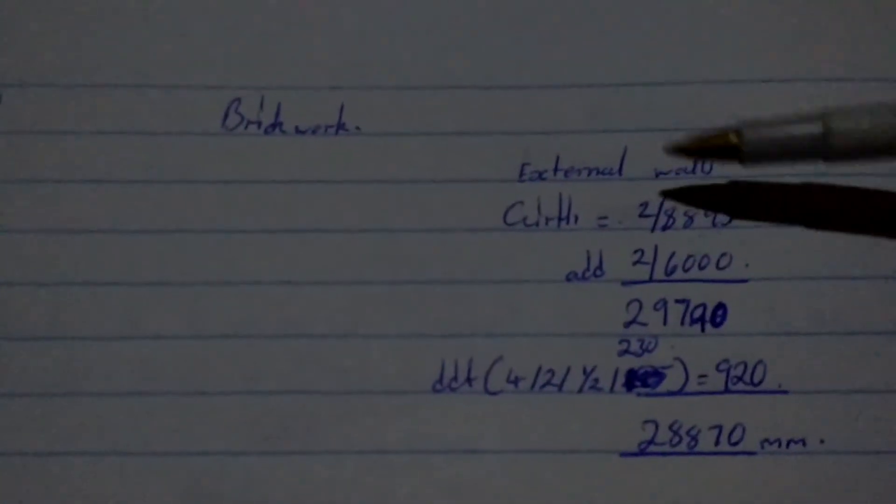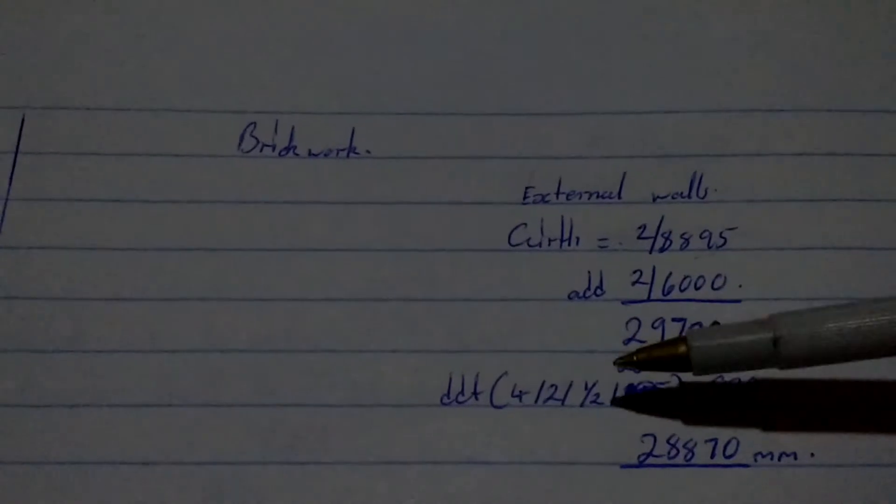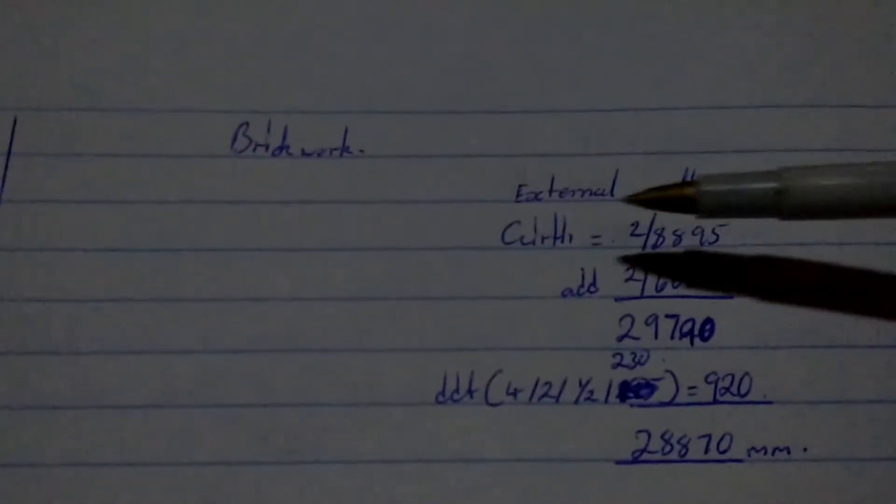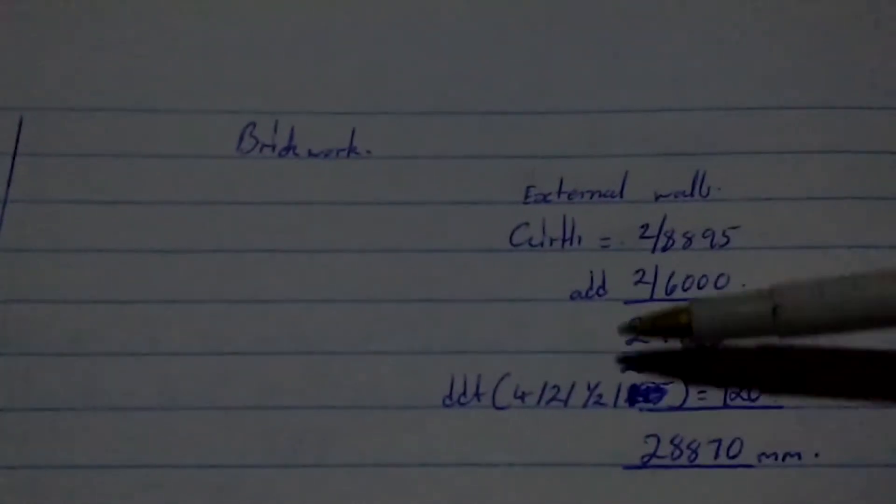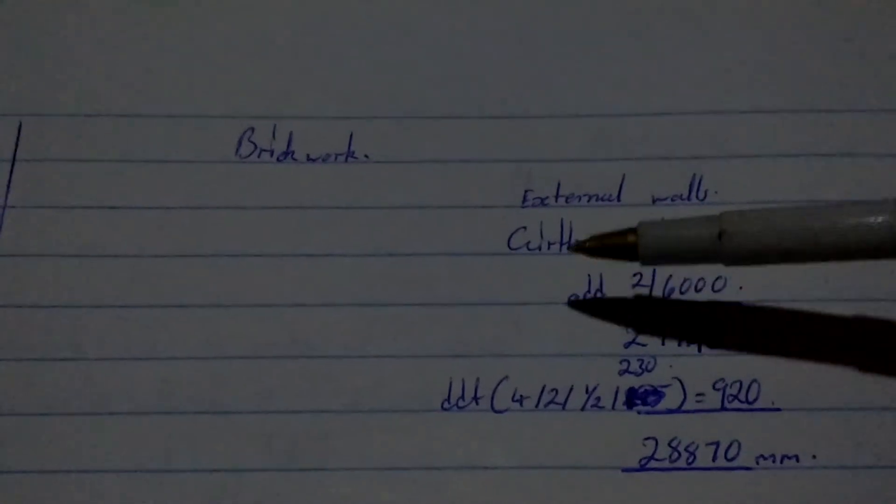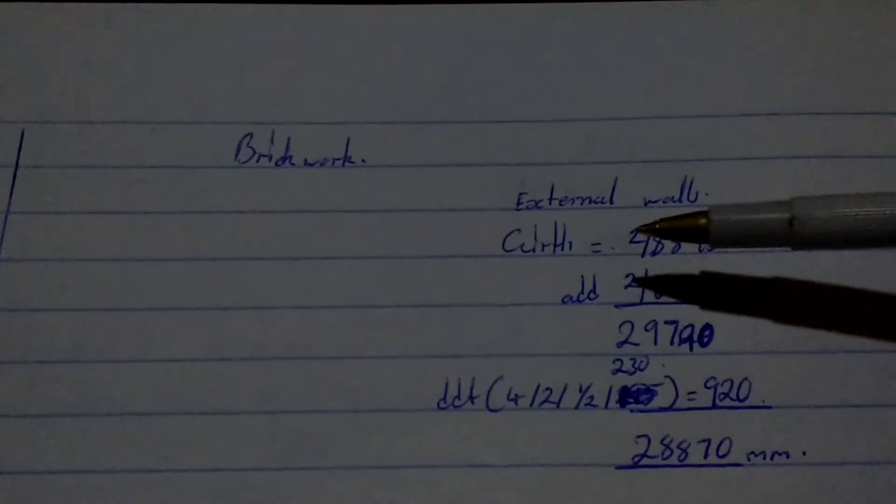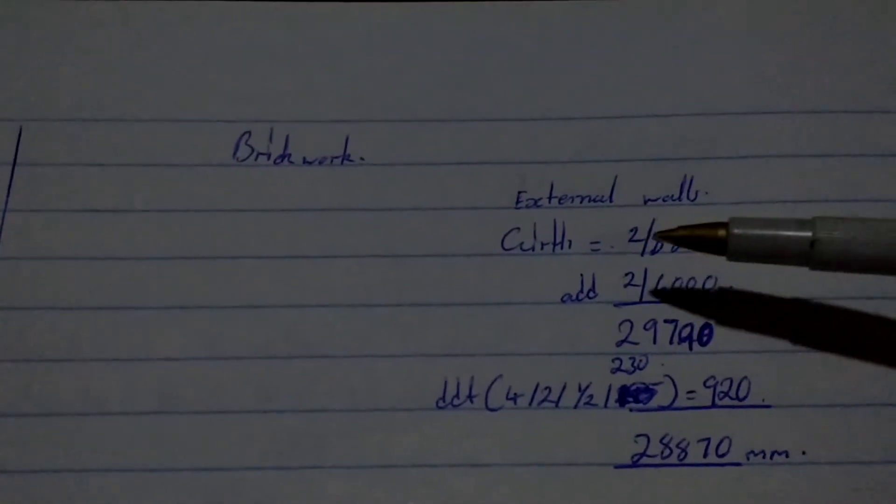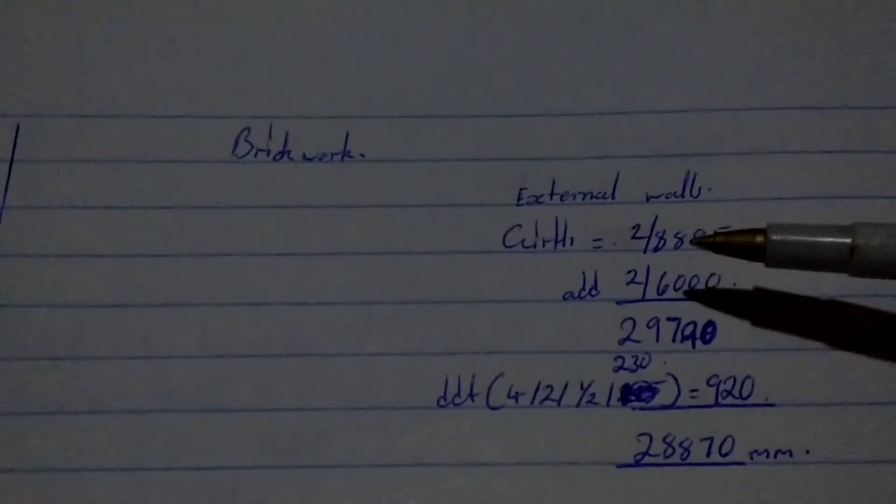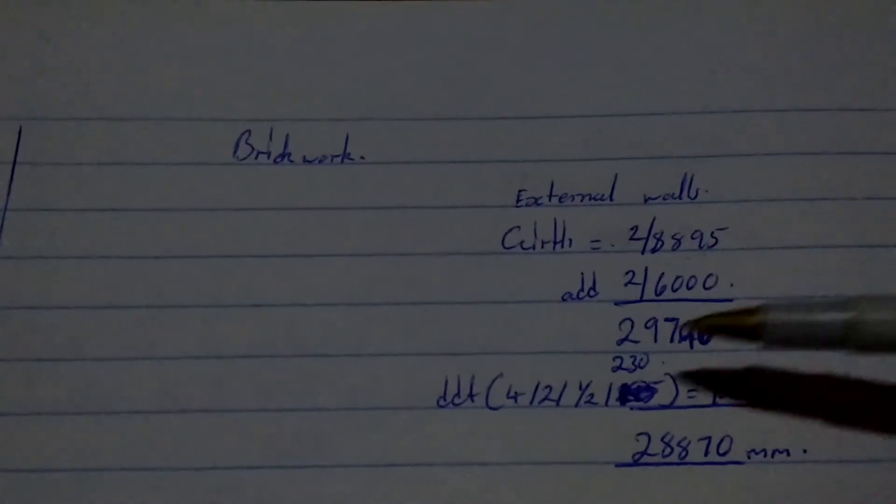So we're going to start with waste calculations for external walls. So on external walls, we're going to calculate girth. We use the girth as our length for the external wall. So we're going to say 2 by 8,895, we add 2 by 6,000 and then we get 29,790 millimeters.